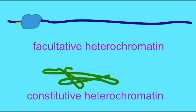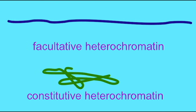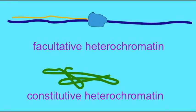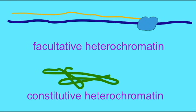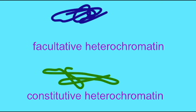Other areas may be converted into heterochromatin, and may be converted into euchromatin, depending on the needs of the cell. These areas are known as facultative heterochromatin.